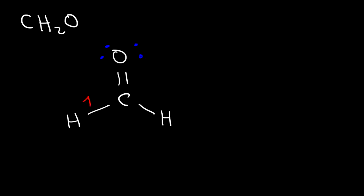We can see that we have one, two, three sigma bonds, and we have a double bond which contains one pi bond. That's the number of sigma and pi bonds found in CH2O, also known as formaldehyde.